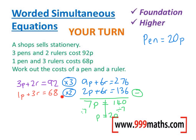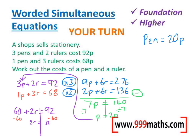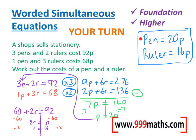Now substitute the value of p back into the first equation to find R. Three p's are 60, so 60 + 2r = 92. Solving like a normal equation gives R = 16 pence. Let's check: three pens = 60, two rulers = 32, and 60 + 32 = 92 pence. For the second equation: one pen = 20, three rulers = 48, and 20 + 48 = 68. Both correct.